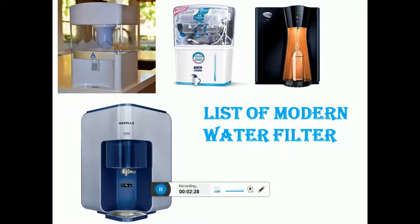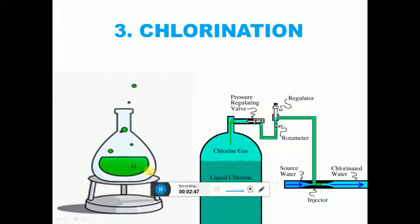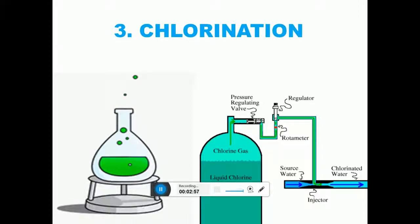Nowadays, many types of modern filters are available. These filters not only remove dust and other suspended particles but also remove germs. Water filtered by such filters can be directly used for drinking. The third method is chlorination. Filtered water can also be purified by adding a correct small amount of chlorine in it. This kills germs and makes it fit for drinking.